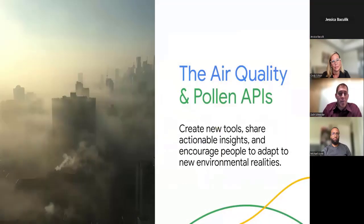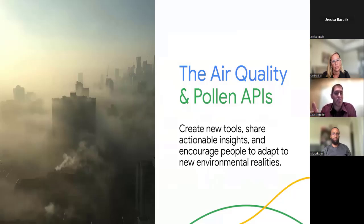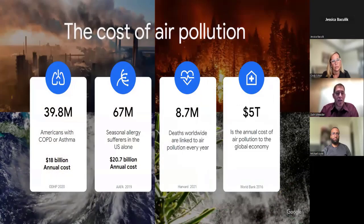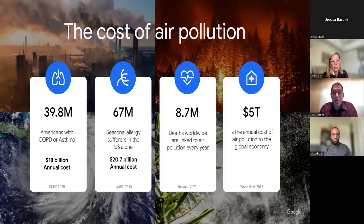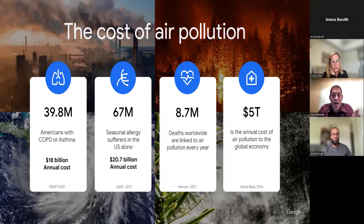The air quality and pollen APIs go beyond just showing the numbers — we develop complex calculations and risk scores. According to the World Health Organization, air pollution is among the greatest environmental threats to public health globally, and it accounts for more than 7 million premature deaths every year. The pollen season is getting longer, creating a huge healthcare cost. According to the World Bank, the cost of air pollution alone is more than $5 trillion every year.